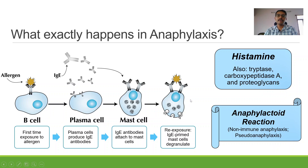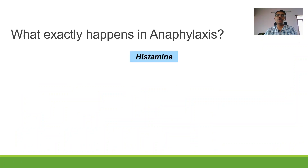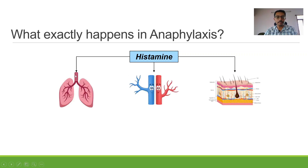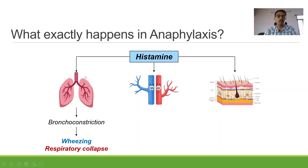So, histamine was released. The moment histamine is released, it gets released into the entire body — there is a systemic release of histamine. This histamine acts on different locations in the body. The three most important locations are the bronchi, blood vessels, and the skin. In the bronchi, specifically, it causes bronchoconstriction. This bronchoconstriction causes wheezing and respiratory collapse. Wheezing is the symptom; respiratory collapse is what will cause death. The fatal event leading to death in anaphylaxis is respiratory collapse because of extensive bronchoconstriction.